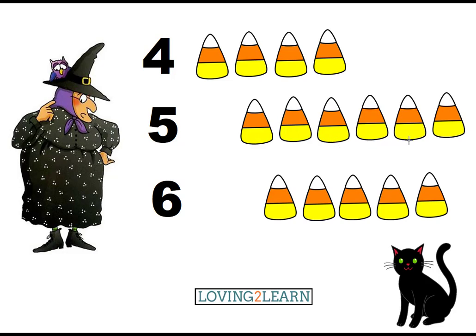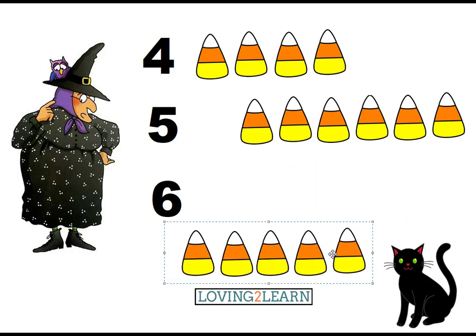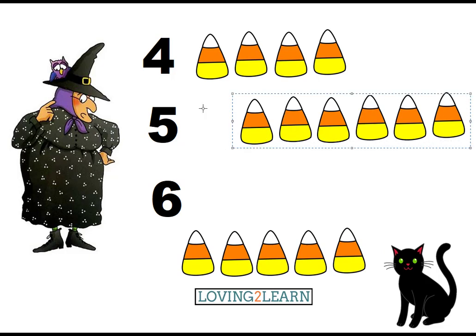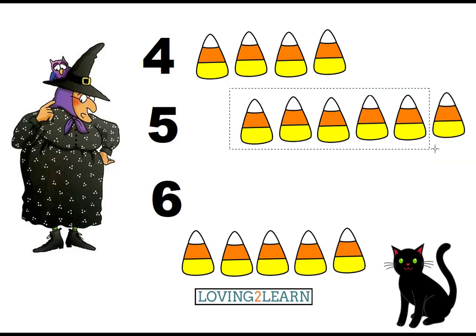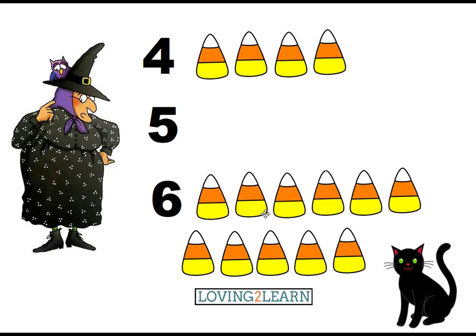Let's count the next row: one, two, three, four, five, six. Where's the number six? Here's the number six. So we have to switch these two around — we're gonna have to put this down here by the number six.